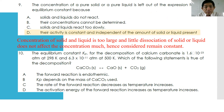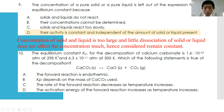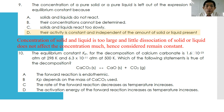Number ten: the equilibrium constant Kp for the decomposition of calcium carbonate is 1.6 × 10⁻²³ atm at 298 K and 6.3 × 10⁻¹¹ atm at 500 K. If you note carefully, at 298 K it is 10⁻²³ and at 500 K it is 10⁻¹¹ — so as temperature increases, Kp increases. This means the decomposition is an endothermic process.